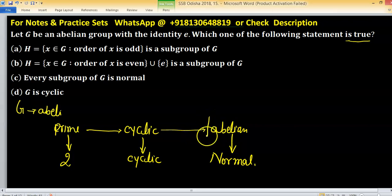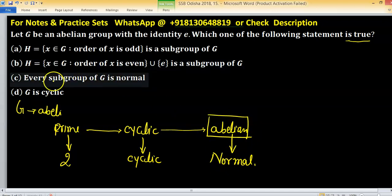According to this, group is abelian group and its subgroup will be normal. So, option C is true.